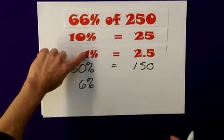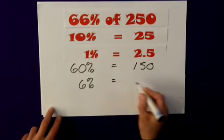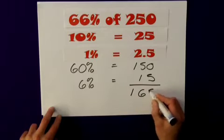So therefore, 1%, 2.5, I need 6 of these as well, and that would give me 15. So my total there is 165.